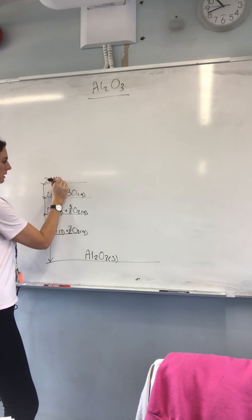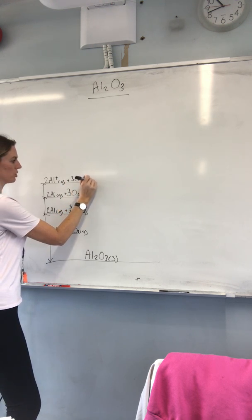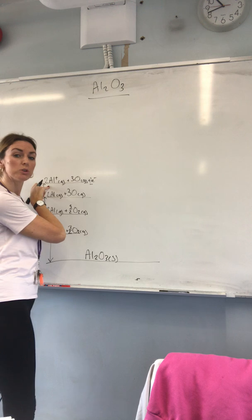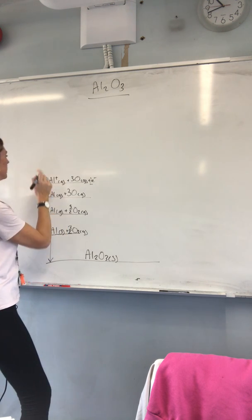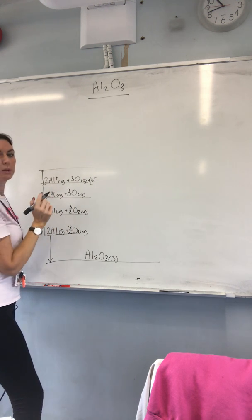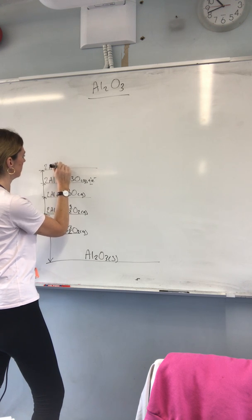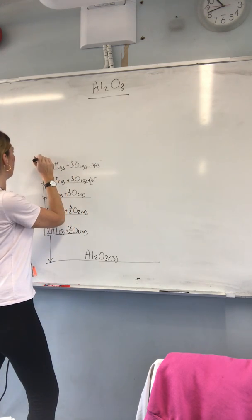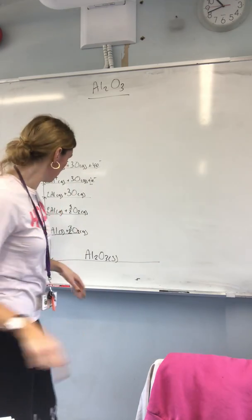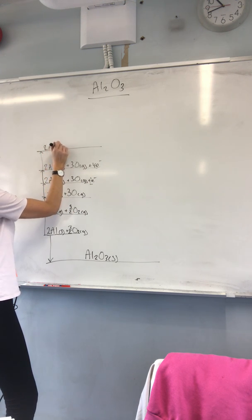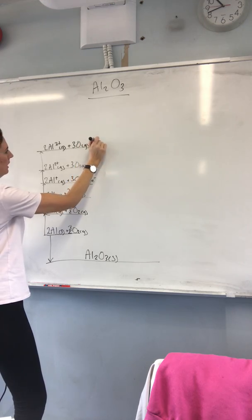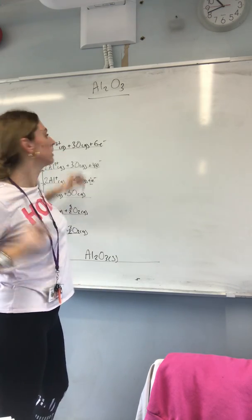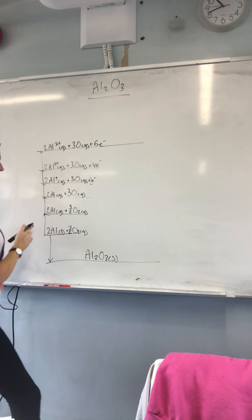Anyway, so we're going to go then to 2 Al+ gaseous. We've not done anything to oxygen, but we have removed an electron. Actually, what we've removed here is two electrons because we've got two aluminium atoms that have become aluminium ions. Next up, we form our aluminium 2+ gas. Again, we've removed another two electrons, so we've actually got four in total now. And then finally, we've got our aluminium 3+ ions and a total of six electrons. We're going to need those six electrons to form three oxygen 2- ions.